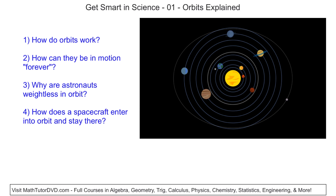We all know that we have the Sun at the center of the solar system — that's what we know today in the 21st century — and the planets go around the Sun. So here we have Mercury, Venus, Earth with the Moon, Mars, Jupiter, Saturn, Uranus, Neptune, and Pluto. Pluto has a slightly different-looking orbit, but effectively all of these look like circular orbits, and that's kind of what we know to be the case today.